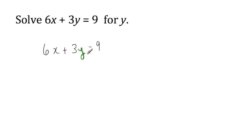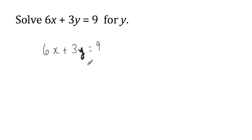Step 2 is to get your variable to one side of the equation, or to one expression. Our variable is y — I've highlighted it here in green. You could circle it or make it bold with your pencil so you know that's your variable. There's y just on one side of the equation, so step 2 is done for us as well.